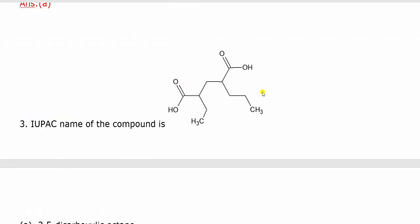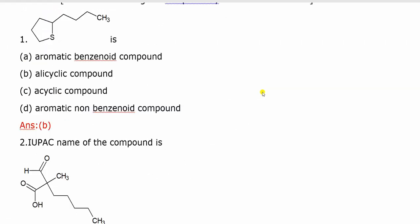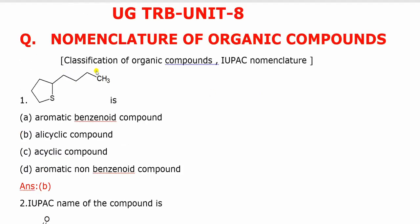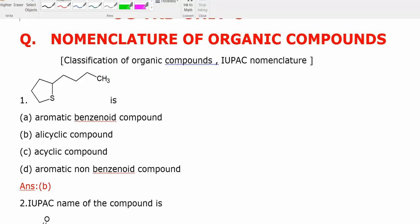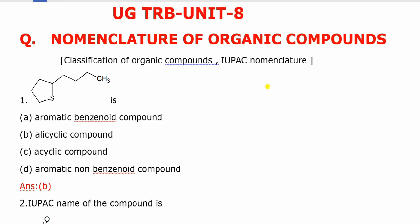Question number 1: this compound is either one type — aromatic benzenoid compound, or alicyclic compound, or acyclic compound, or aromatic non-benzenoid compound. In general classification, organic chemistry is two types: one is cyclic, and one is acyclic. Acyclic is open chain, and the other is cyclic.